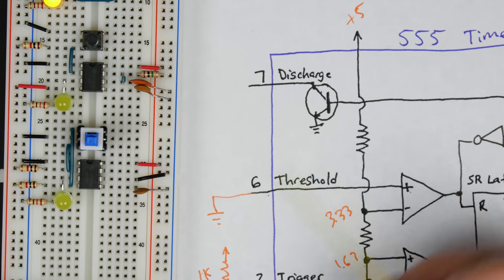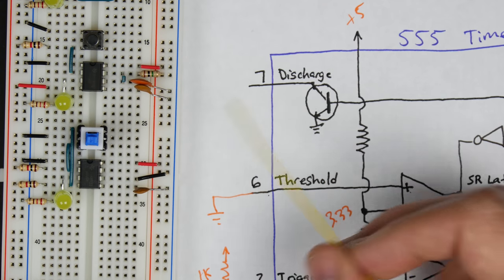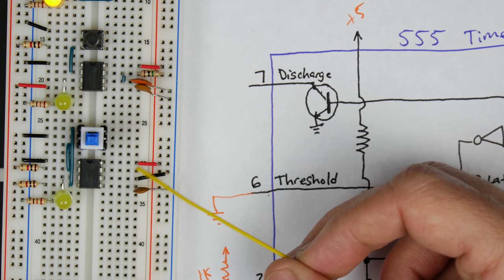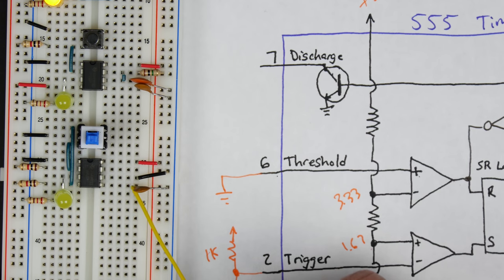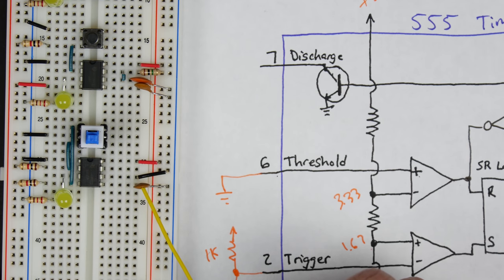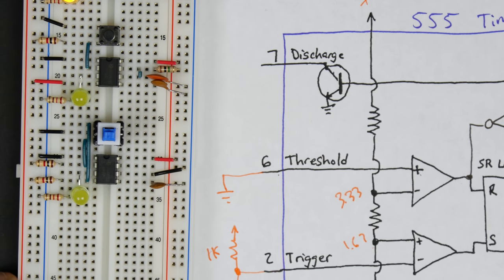And then pin 7 is our discharge pin. No need to connect that. We're not discharging anything. There's no capacitor in here. So we just leave that disconnected. And then pin 5, as usual, we have our little 0.01 microfarad capacitor in there for noise, as recommended.